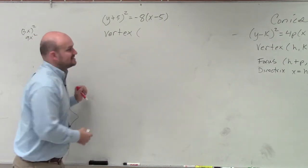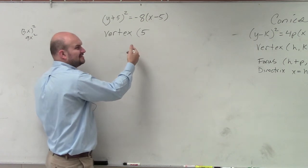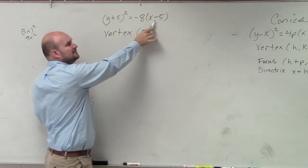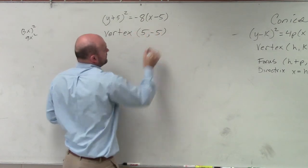So my vertex in this case is going to be 5, and that's basically, Cole, what you're doing, because this is, I think, the third time that we've talked about this today. So remember, it's basically just the opposite. So you're going to have 5, negative 5 as your vertex.